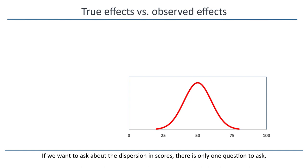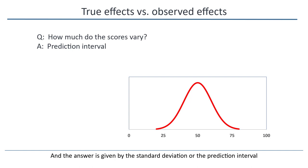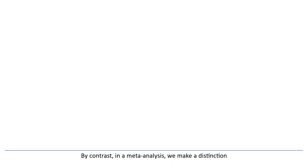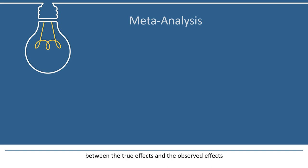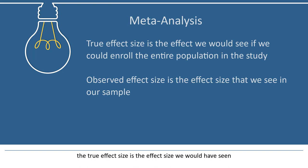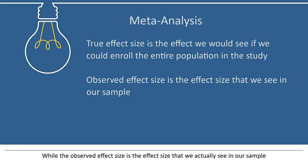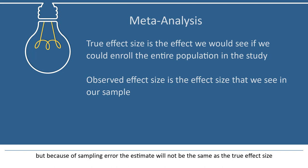And the answer is given by the standard deviation or the prediction interval. By contrast, in a meta-analysis, we make a distinction between the true effects and the observed effects. If a study is based on a sample drawn from a hospital, the true effect size is the effect size that we would have seen if we could have enrolled the entire population in the study, while the observed effect size is the effect size that we actually see in our sample. The observed effect size serves as an estimate of the true effect size, but because of sampling error, the estimate will not be the same as the true effect size.